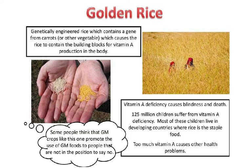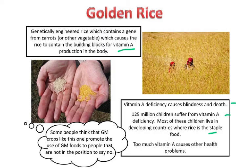Regarding increasing nutritional value of crops, the example is golden rice — genetically engineered rice containing a gene from carrots or other vegetables that causes the rice to contain the building blocks for vitamin A production in the body. Vitamin A deficiency causes blindness and death; 125 million children suffer from it, most in developing countries where rice is a staple food. Countries where GM crops are not allowed will not grow golden rice, but it could save the lives of these 125 million children.